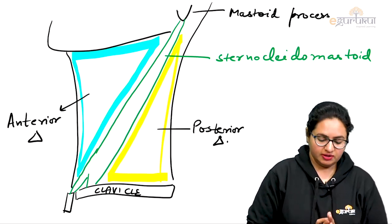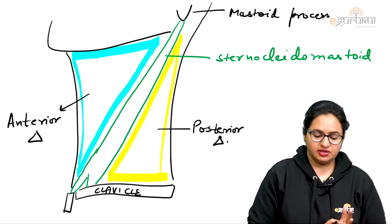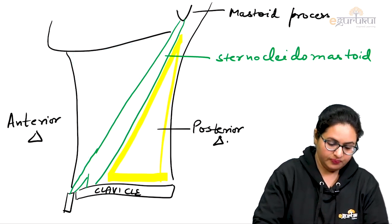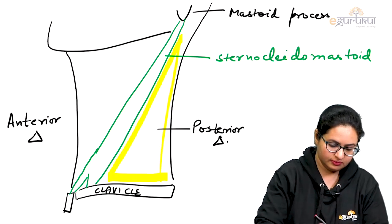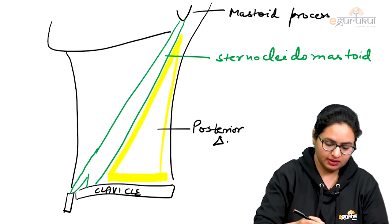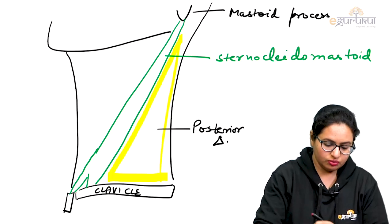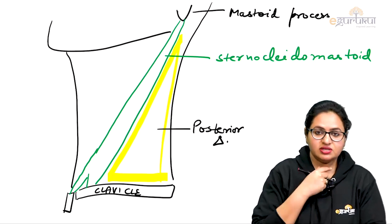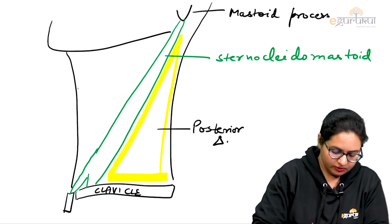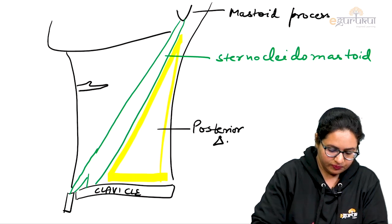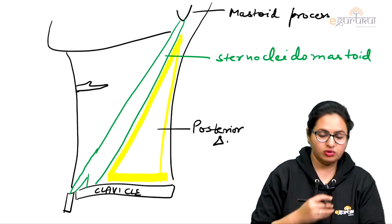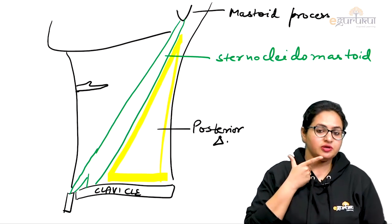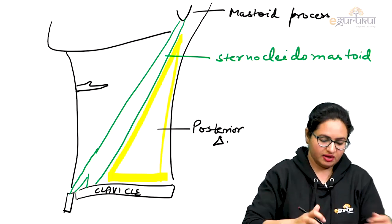After knowing this division, there are further subdivisions of the anterior triangle. For the further subdivisions, we need to know the various muscles which help in this subdivision. In the midline of the neck, we have the hyoid bone at the junction of the floor and the anterior aspect of the neck. There is a muscle present in a V-shape — this is the digastric muscle, having two bellies.